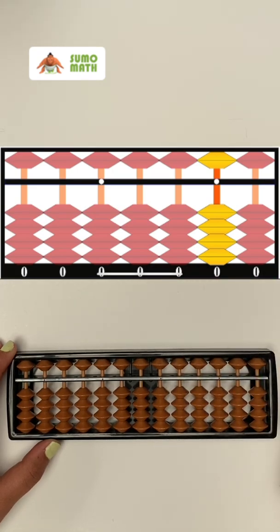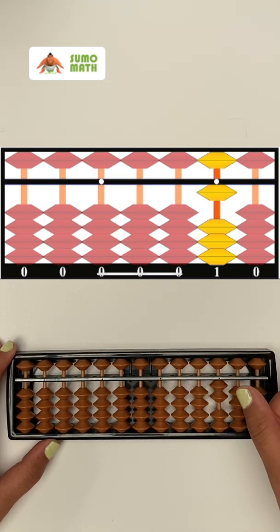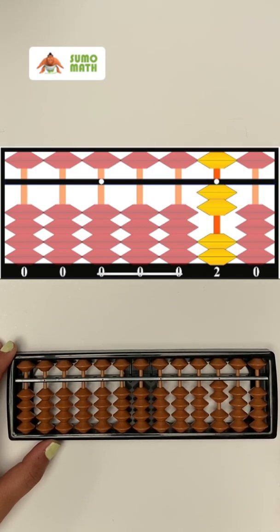So, to add 1 plus 1, we just move a bead up and then add one more to it. The answer is 1, 2. We're done here and now you know how to add on abacus.